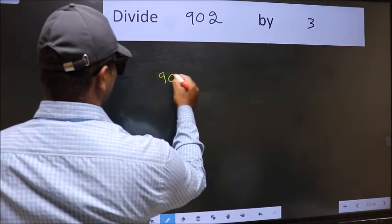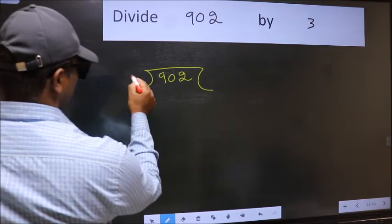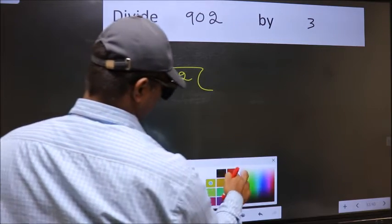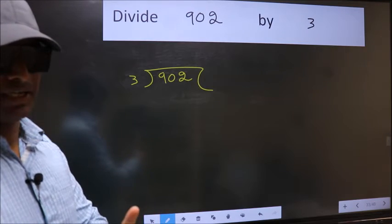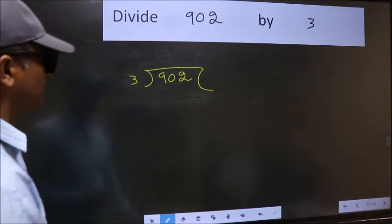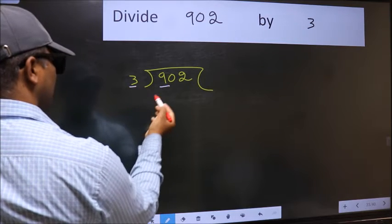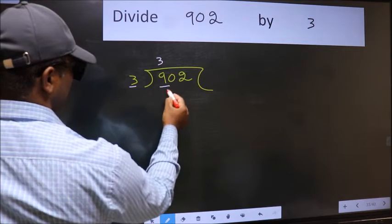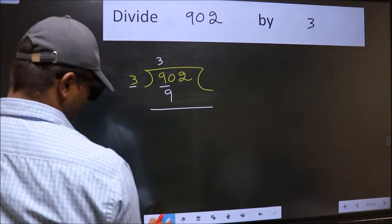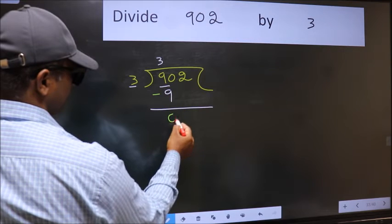9, 0, 2 and 3 here. This is your step 1. Next, here we have 9 and here 3. When do we get 9 in 3 table? 3 times 3 is 9. Now we should subtract. 9 minus 9, 0.